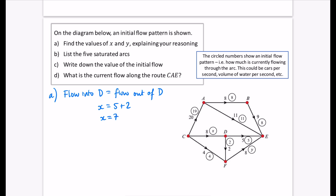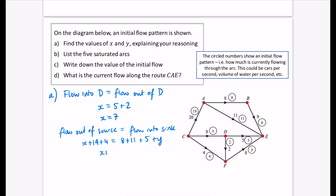For Y, I'll use the flow out of the source equals the flow into the sink. Out of the source (circled numbers) we have X, 19, and 4. X is 7, so that's 30. Into the sink, there's 8, 11, 5, and Y. 8 plus 11 is 19, plus 5 is 24, plus Y must equal 30, so Y equals 6. So X is 7 and Y is 6.